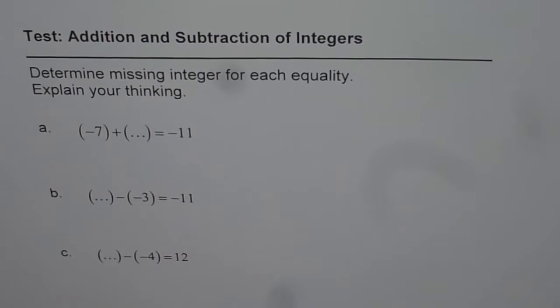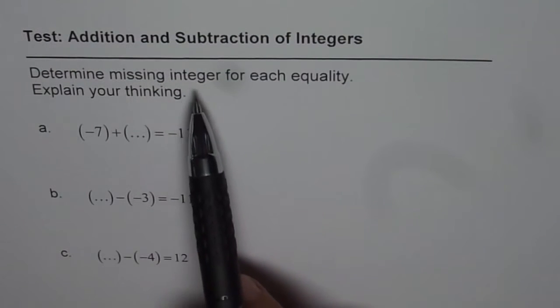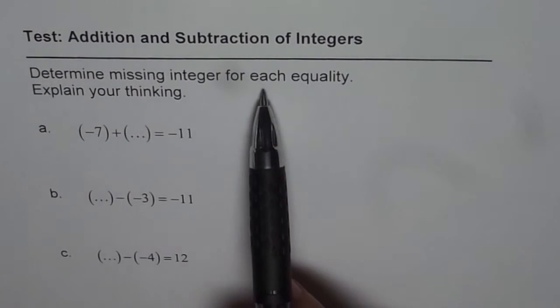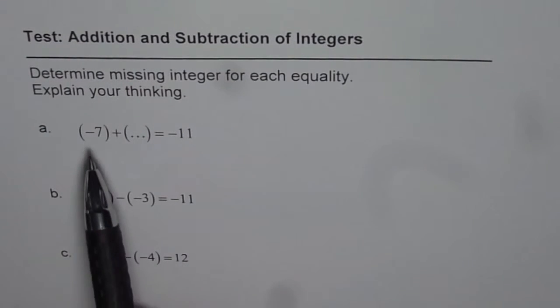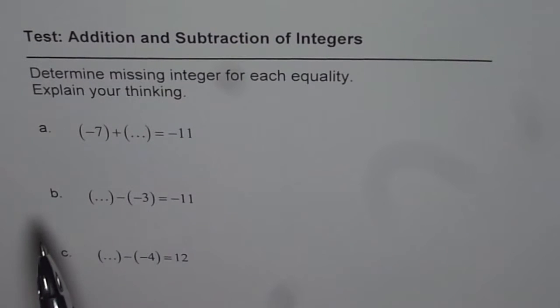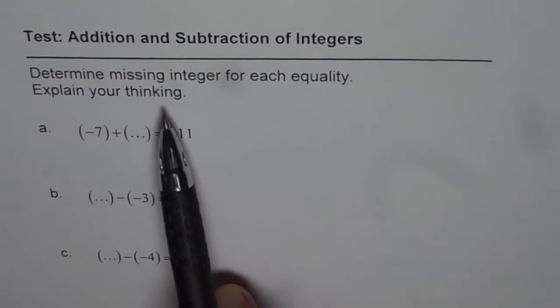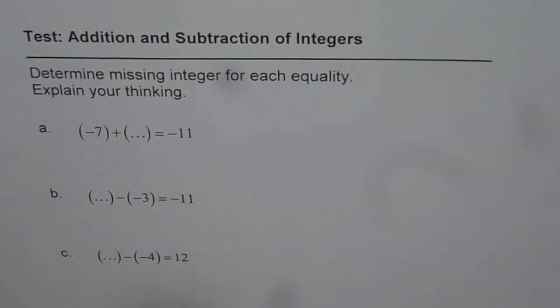The question is: determine missing integer for each equality. Equality is an equation where the left side should be equal to the right side. And the second part of this question is: explain your thinking.